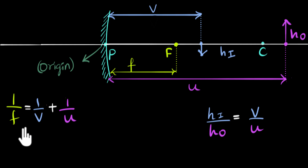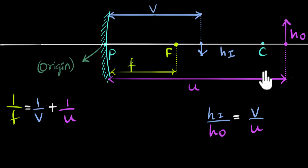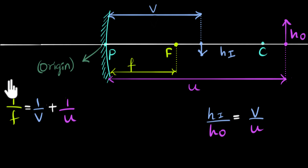In this formula, instead of thinking of f, v, and u as distances, we'll imagine these are the values of positions. So f can be thought of as the value of the position of the principal focus. Similarly, v is the value of the position of the image, and u is the value of the position of the object. If we think of these as positions, then in a graph, positions can have both positive and negative values, so these numbers become sign-sensitive.